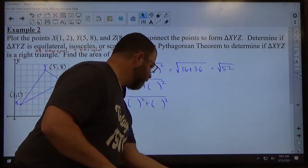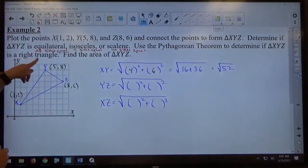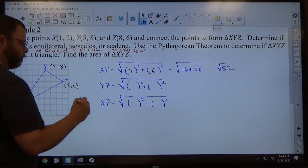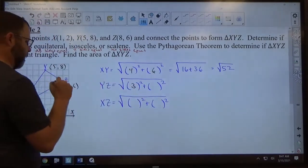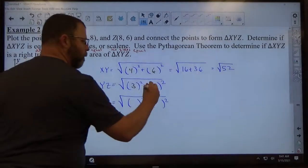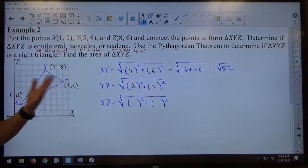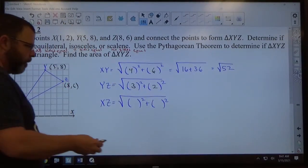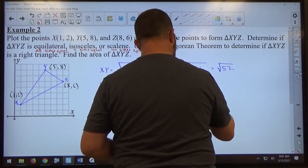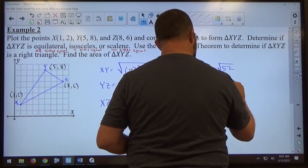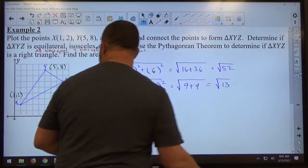If we try and find the length of YZ from Y to Z, how far apart are 5 and 8? 3. And how far apart are 8 and 6? 2. And that's the square root of 9 plus 4, which is the square root of 13.